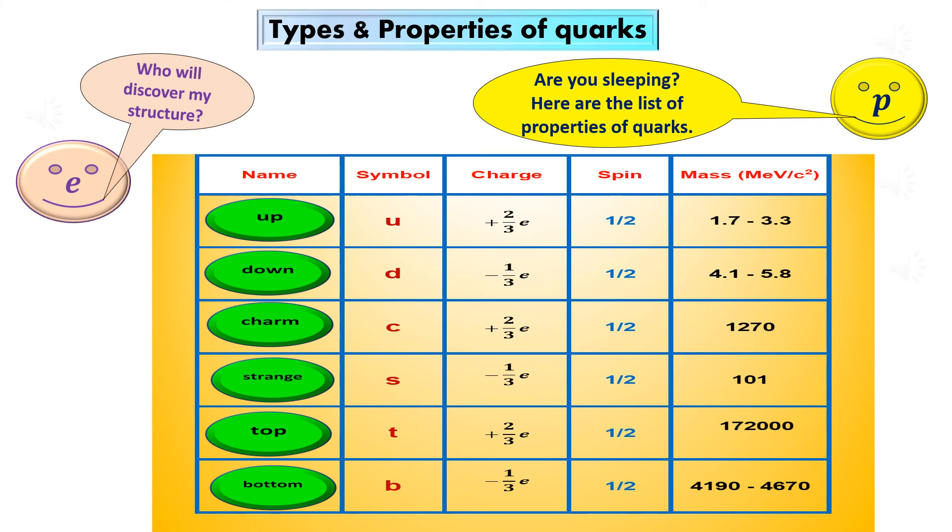Bottom quark. The symbol used to represent a bottom quark is B. The mass of the bottom quark ranges from 4.19 to 4.67 giga electron volts per C square. Its electric charge is minus one-third E, where E is the fundamental charge.